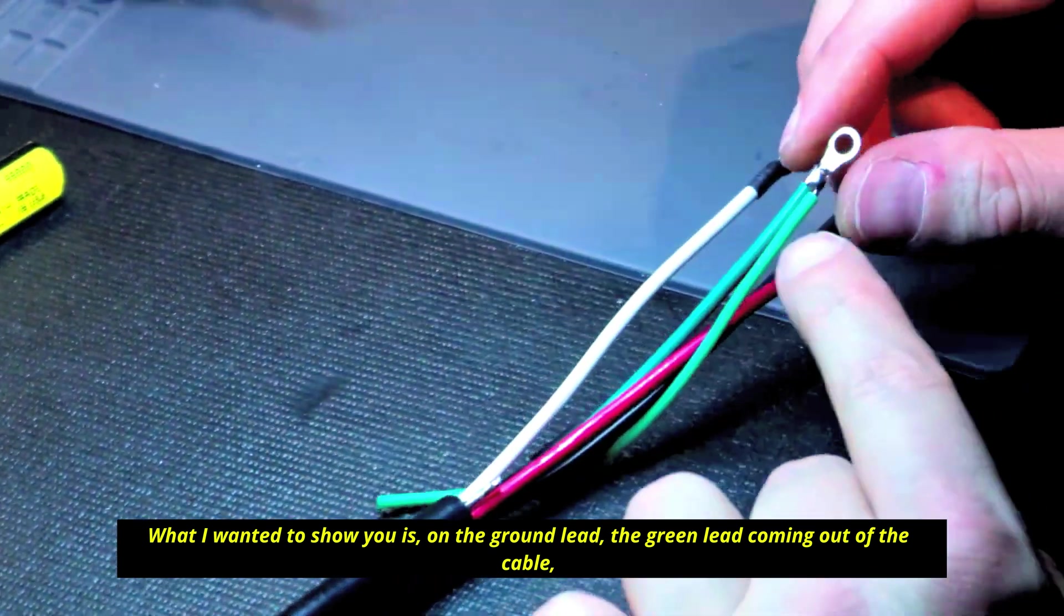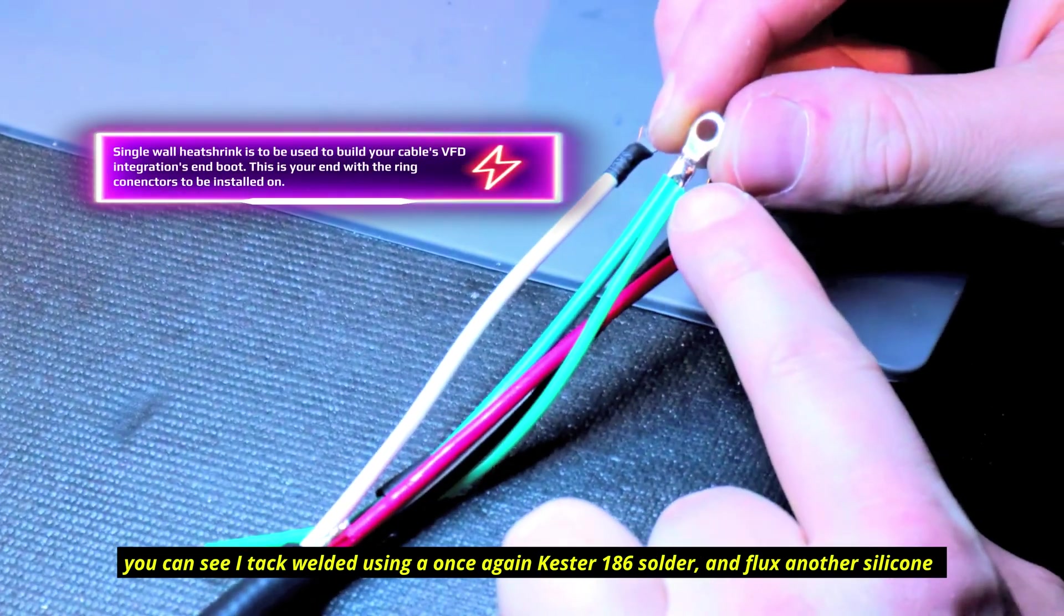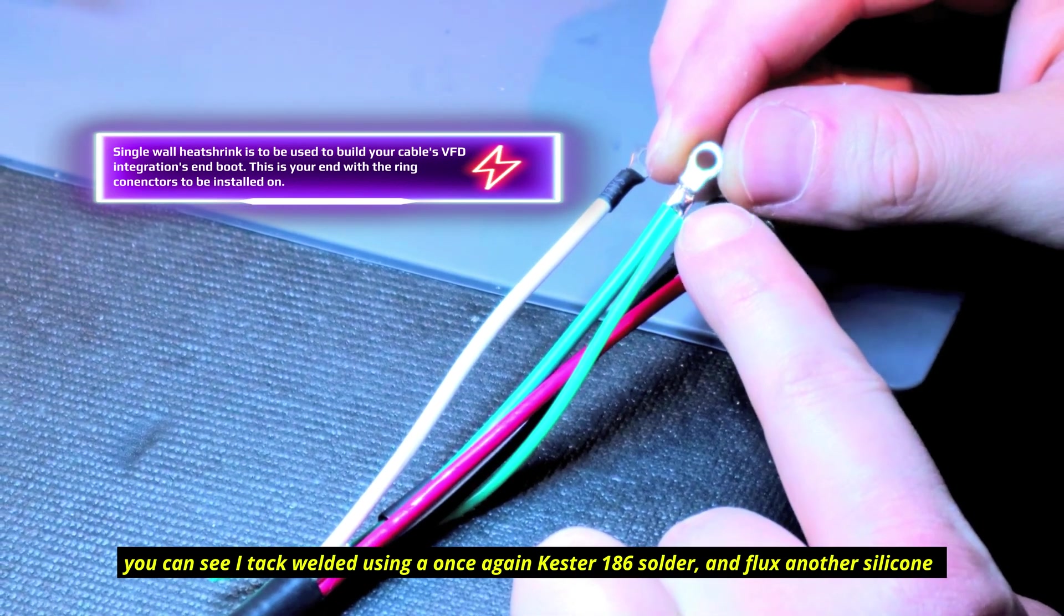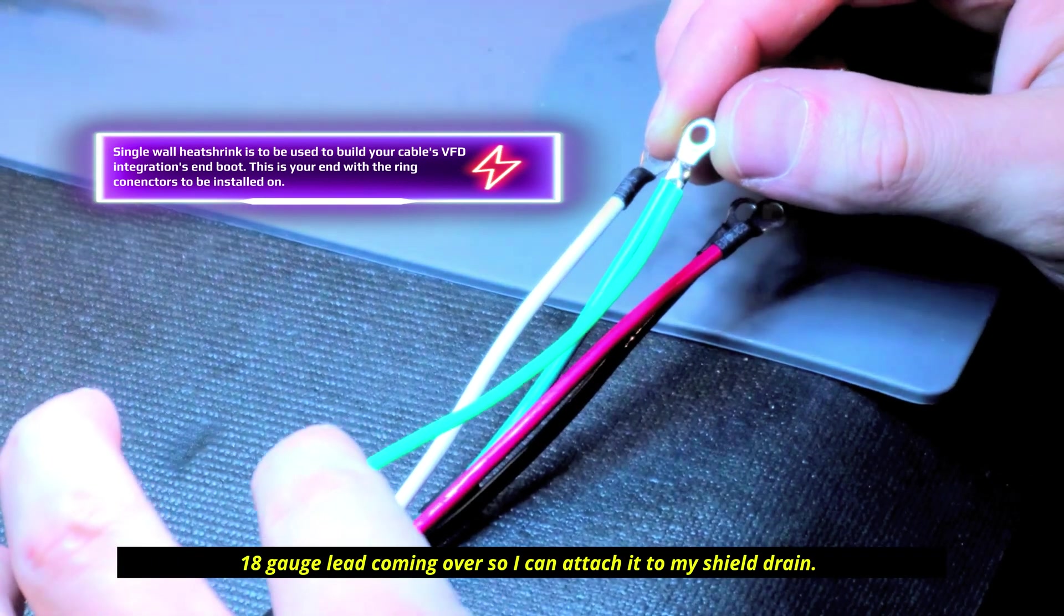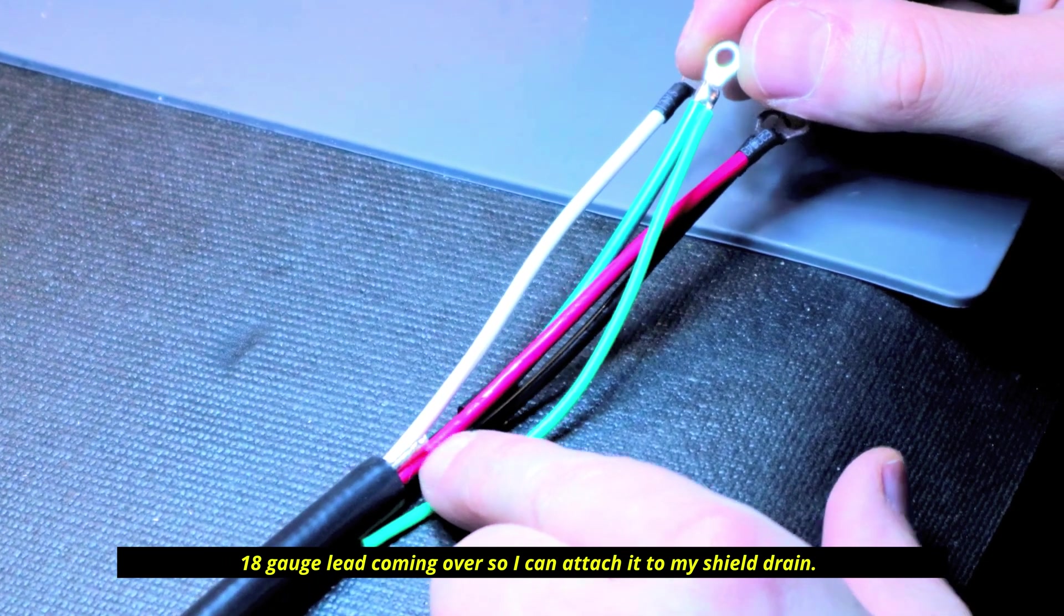What I wanted to show you is on the ground lead, the green lead coming out of the cable, you can see I tack welded using, once again, Kester 186 solder and flux, another silicone 18 gauge lead coming over so I can attach it to my shield drain.